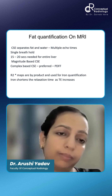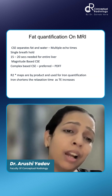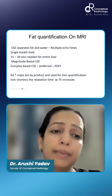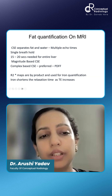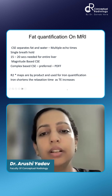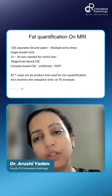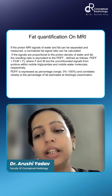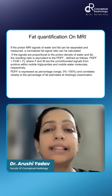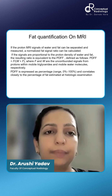The preferred type is the complex ones. R2* maps are the byproduct and are used for iron quantification. This is what we were talking about — it shortens the TE and enhances the signal decay.